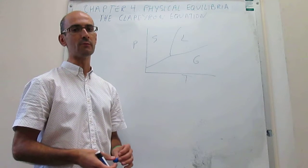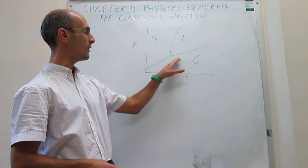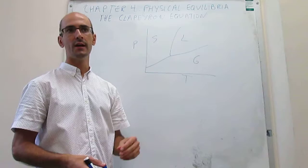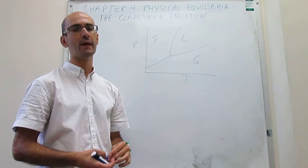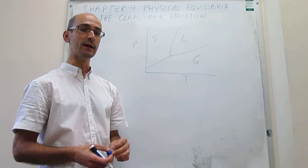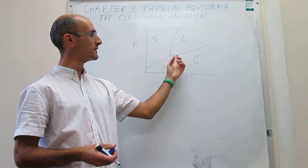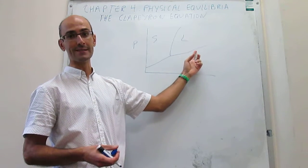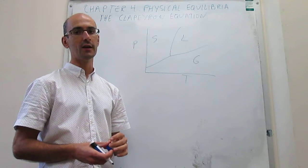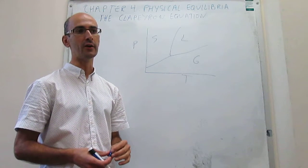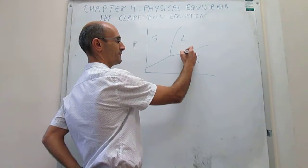Until now we've described these phase diagrams using a qualitative approach, in which we were just describing how these phase boundaries are measured, what the triple point is, what the critical point is, and so forth. What we're going to do next is actually take a more quantitative approach to see that we can actually predict aspects of these phase boundaries doing a little bit of thermodynamic work that we're familiar with from earlier in this chapter. So let's get to any of these points in a phase boundary.